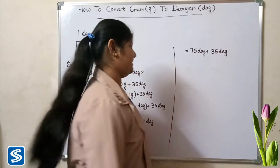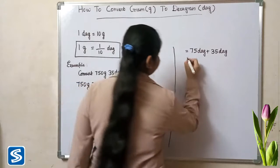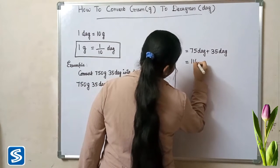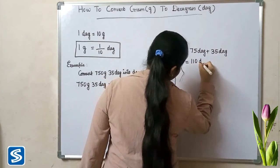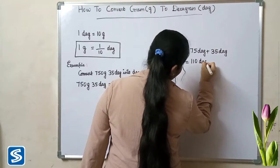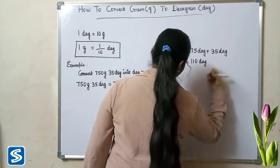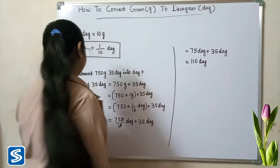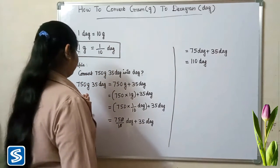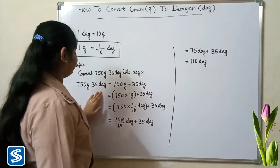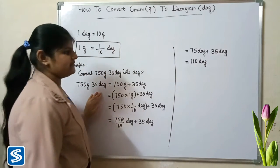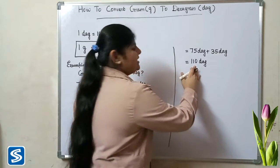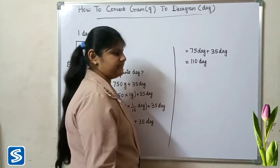75 decagrams plus 35 decagrams will be 110 decagrams. So 750 grams 35 decagrams is equal to 110 decagrams.